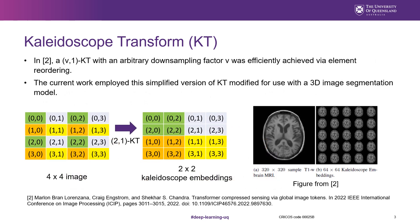A Collidoscope Transform with a smear factor of 1 and an arbitrary downsampling factor can be efficiently achieved via element reordering. The figures show examples for 2D images to help with understanding. The current work employed this simplified version of the Collidoscope Transform, modified for use with a 3D image segmentation model.